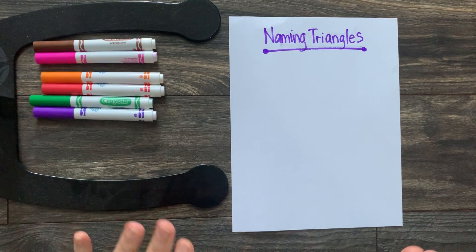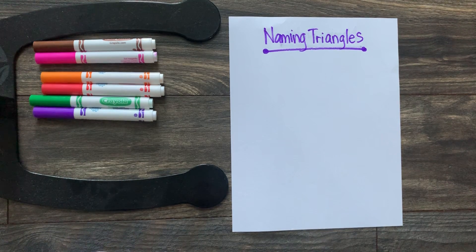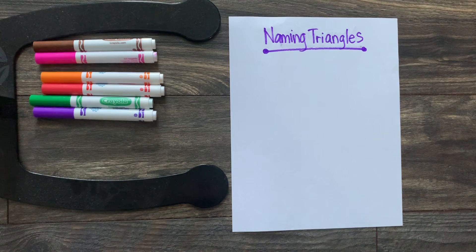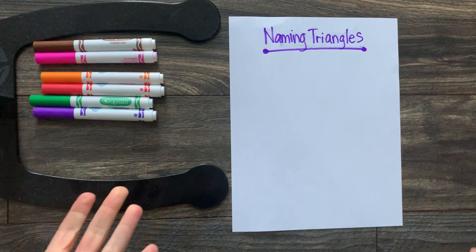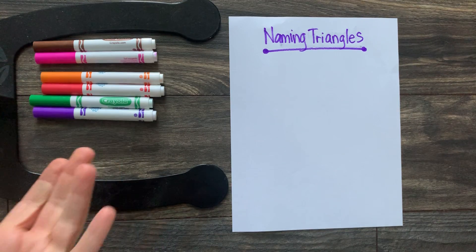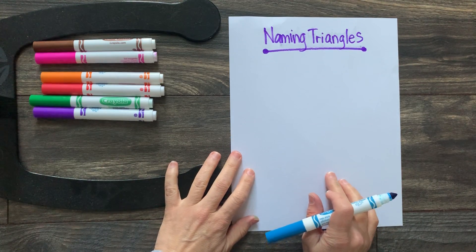Today I'm just going to cover the different ways of naming triangles. I feel like this is a really great way to make an anchor chart because there are two ways to name triangles and two different what we call classifications. So when you're ready, get your paper together, we're going to be naming triangles.